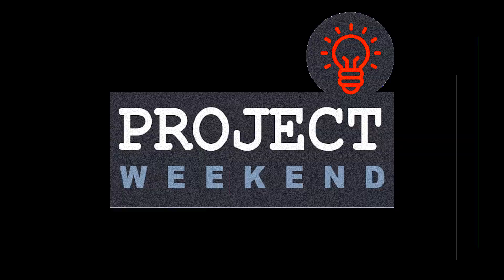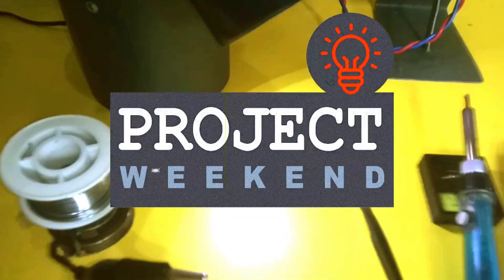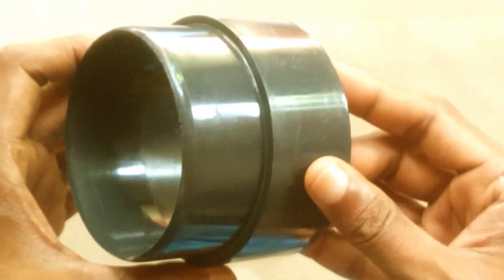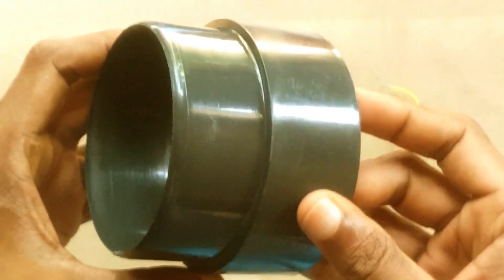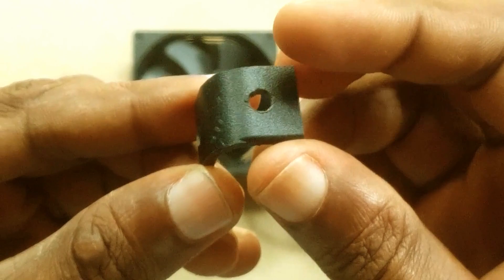Hello friends, welcome to Project Weekend channel. Today we are going to build a soldering station with multiple features. We need a cooling fan salvaged from a broken PC, a 4-inch PVC socket, and some plastics from abandoned plastic equipment.